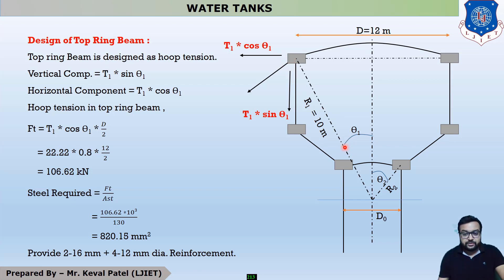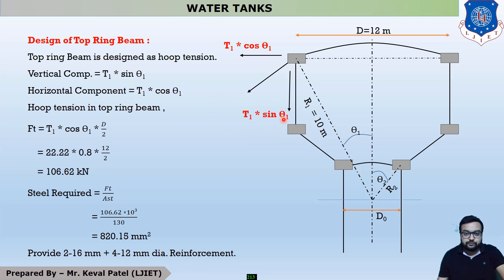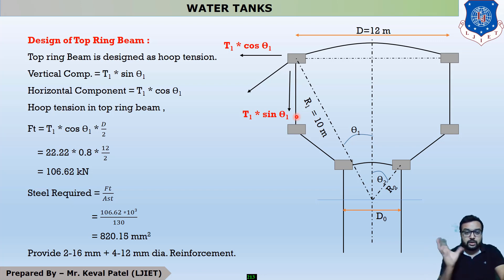The angle theta gives two components for the top ring beam. The vertical component is t1·sin(theta1) acting vertically downward, and the horizontal component is t1·cos(theta1). The t1·cos(theta1) going downward is used when calculating the bottom ring beam, where we find the upward component's self-weight. Here we are finding the top ring beam.